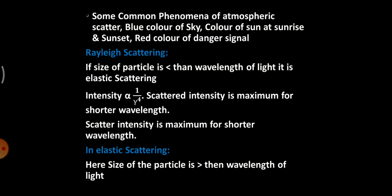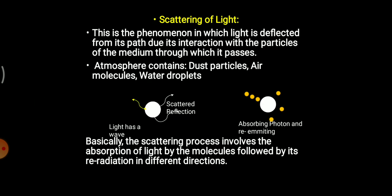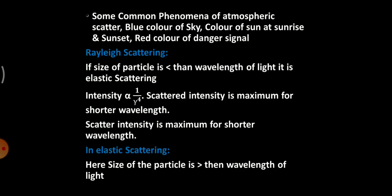An important concept related to scattering of light is Rayleigh scattering. A scientist named Rayleigh gave a phenomenon known as Rayleigh scattering. He stated that whenever the size of the particle — considering dust particles, air molecules, and water droplets — is less than the wavelength of light, it is elastic scattering.